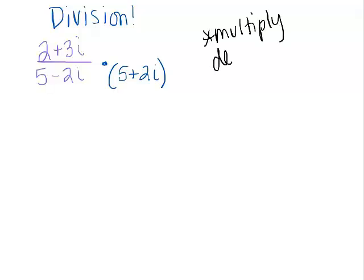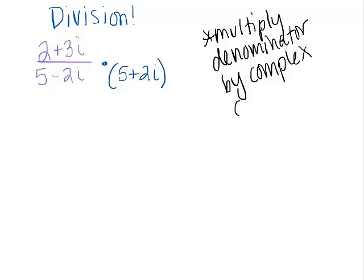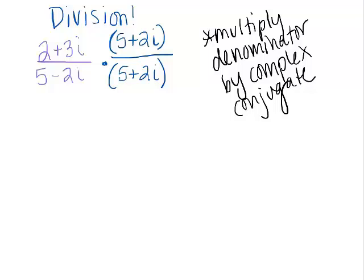Multiply denominator by its complex conjugate. But we have a problem. We can't just multiply the denominator by something. We're only allowed to multiply by one. That's the only number that won't change the value of our expression. So if we're multiplying the denominator by 5 plus 2i, we also have to multiply the numerator by 5 plus 2i. So you're multiplying the denominator by the complex conjugate and the numerator as well.